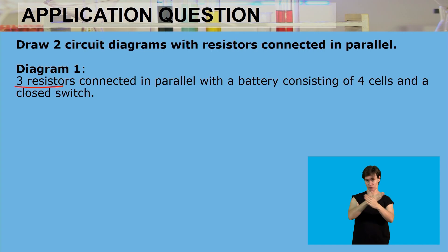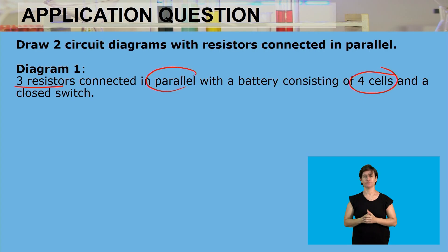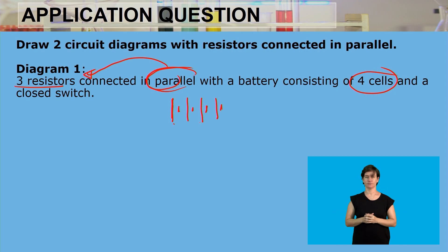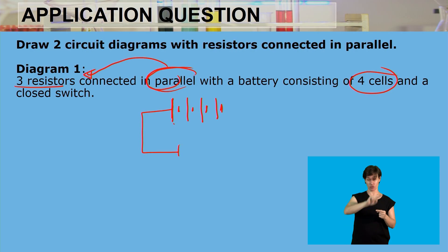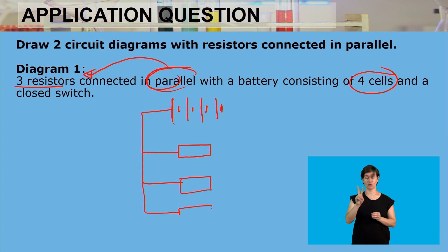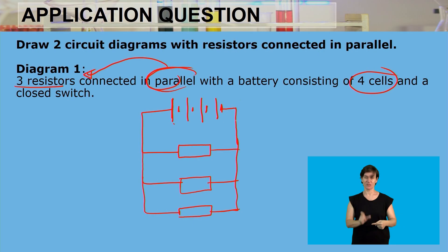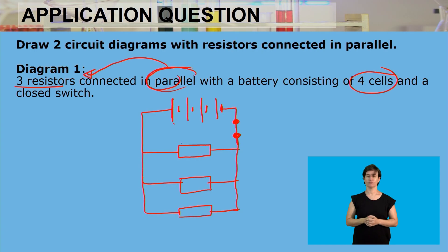For Diagram 1, we draw a diagram with three resistors and four cells, with the resistors connected in parallel. Our battery has four cells. If resistors are connected in parallel, they provide alternative pathways for the current to flow. I have my three resistors all connected in parallel, and I also need a closed switch.